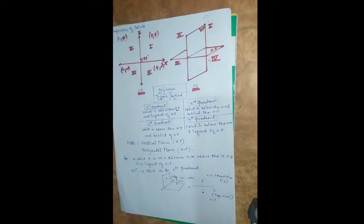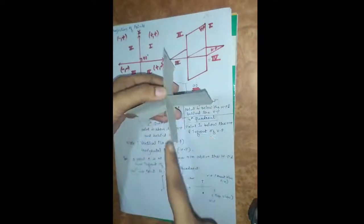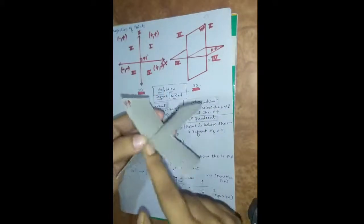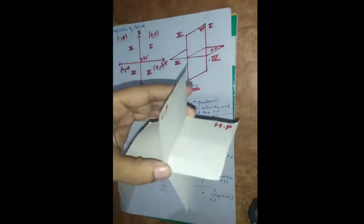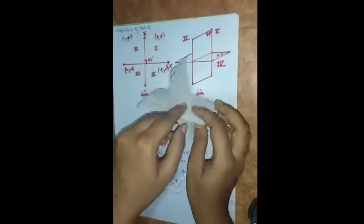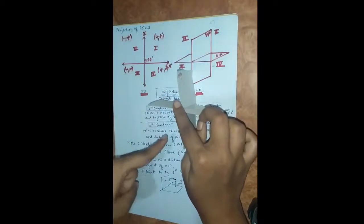This is the vertical plane, denoted VP, and this is the horizontal plane, denoted HP. Both planes are at a right angle with each other. This gives us the first quadrant, second quadrant, third quadrant, and fourth quadrant. We will now study the position of points in each respective quadrant or plane.